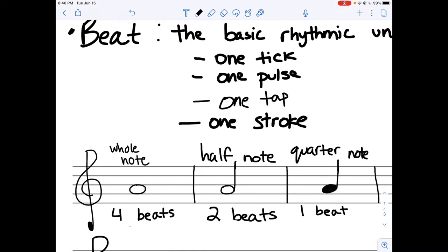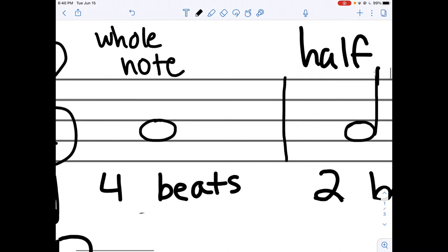When you're counting, how do you count a whole note? You count one, two, three, four. So let's say you're playing the note. In your mind, you would count one, two, three, four, and then play whatever is next.